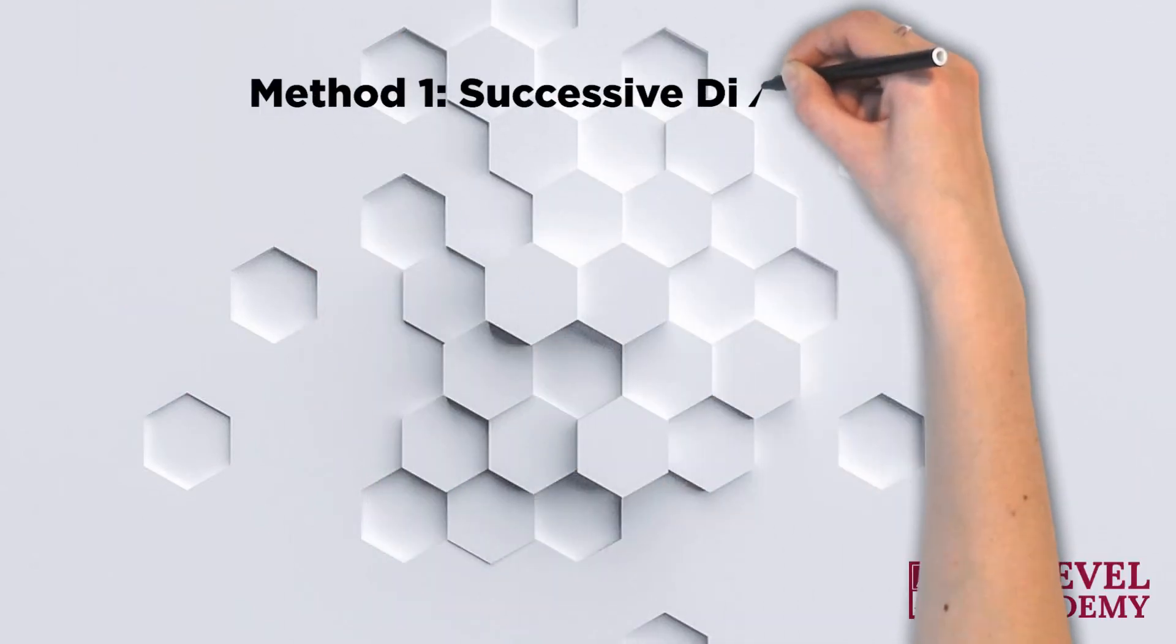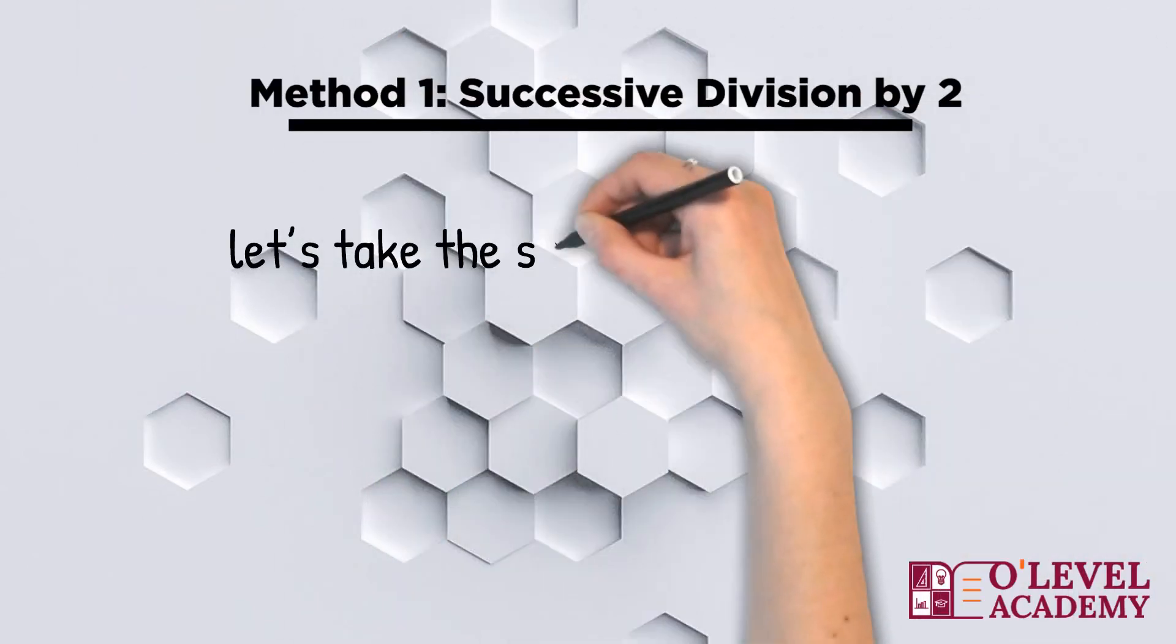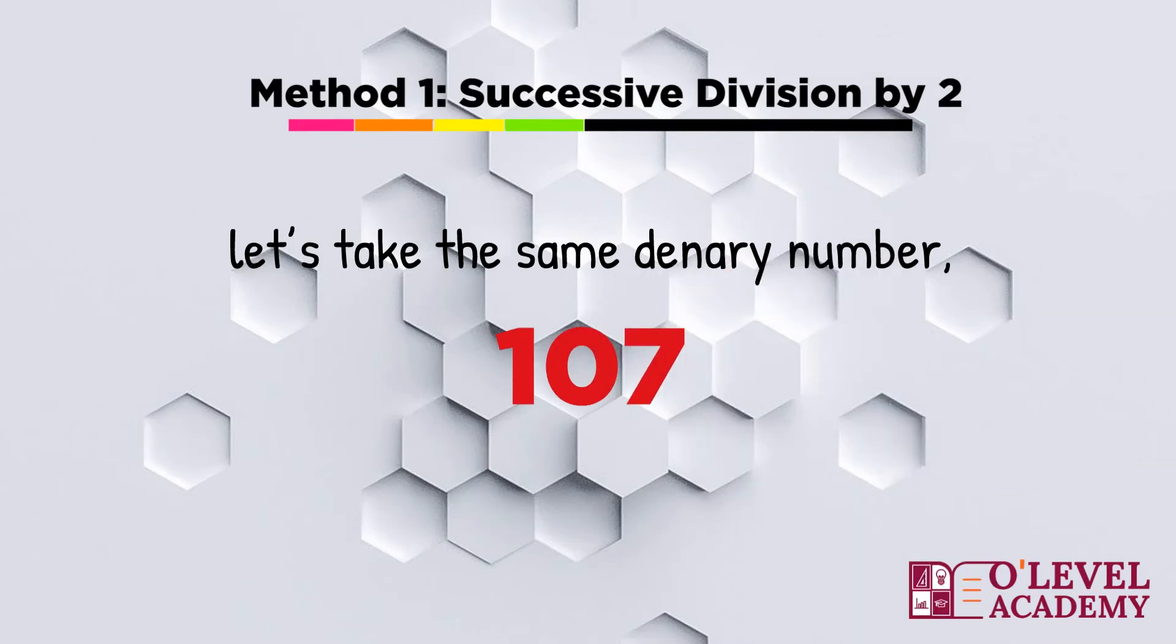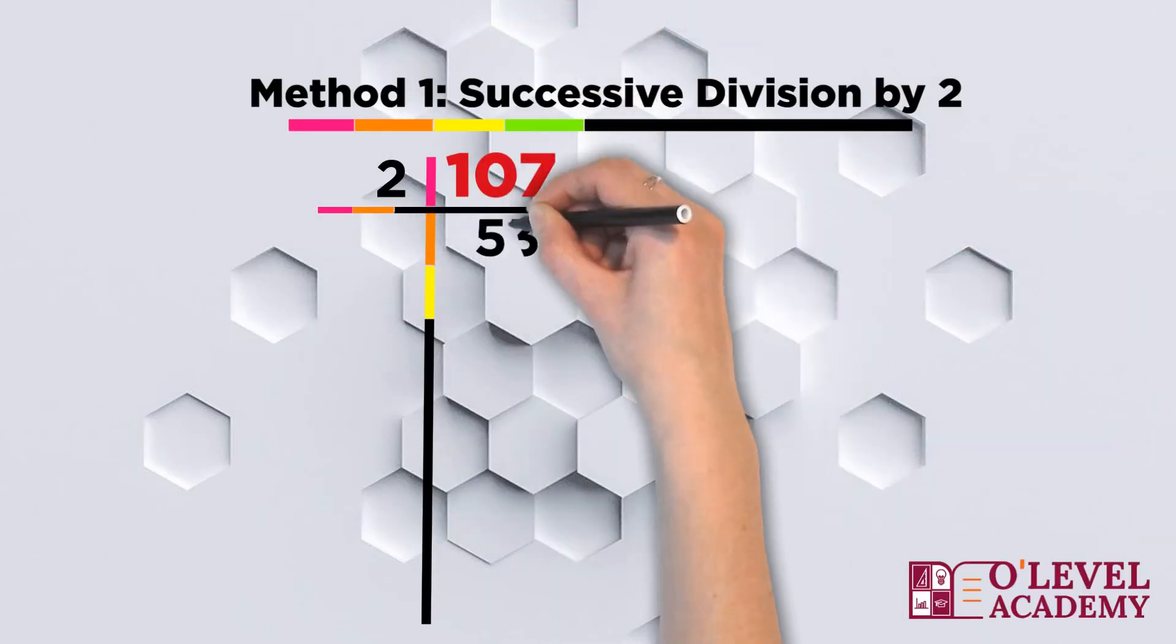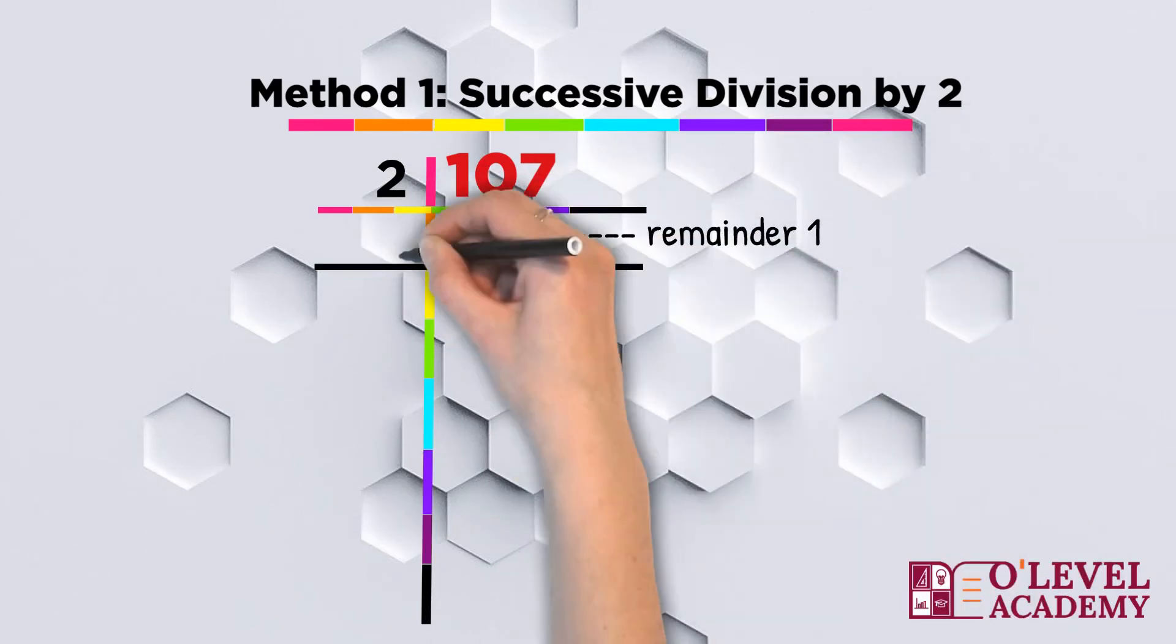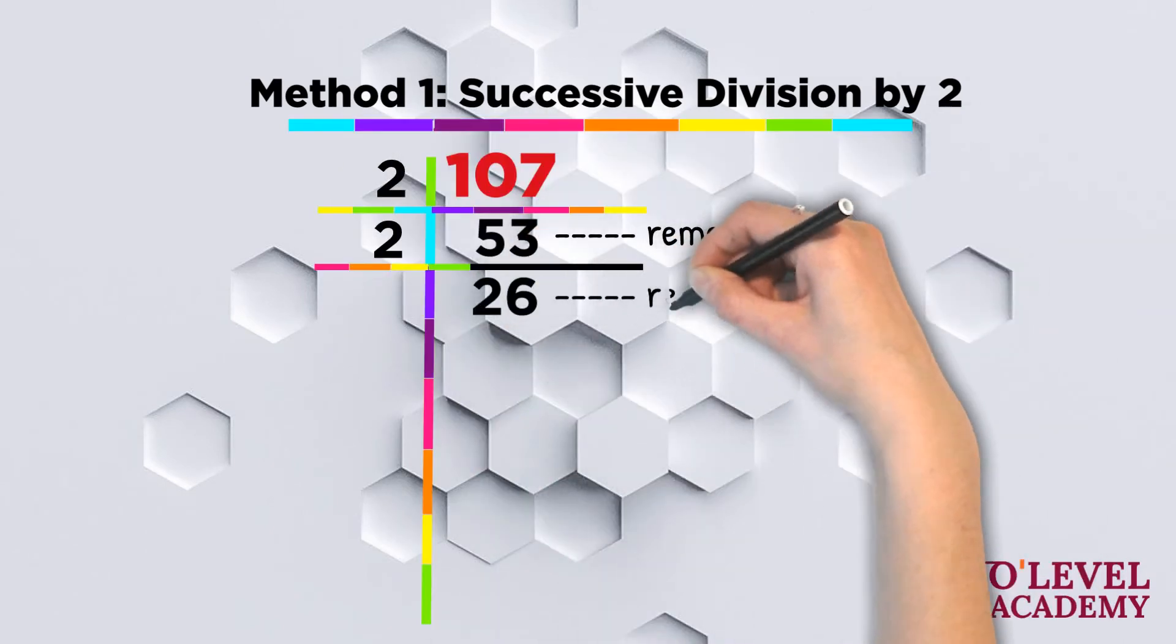We will now see successive division method. For simplicity we are taking the same number. We will take the value 107 and divide it with 2 again and again until the value becomes 0.